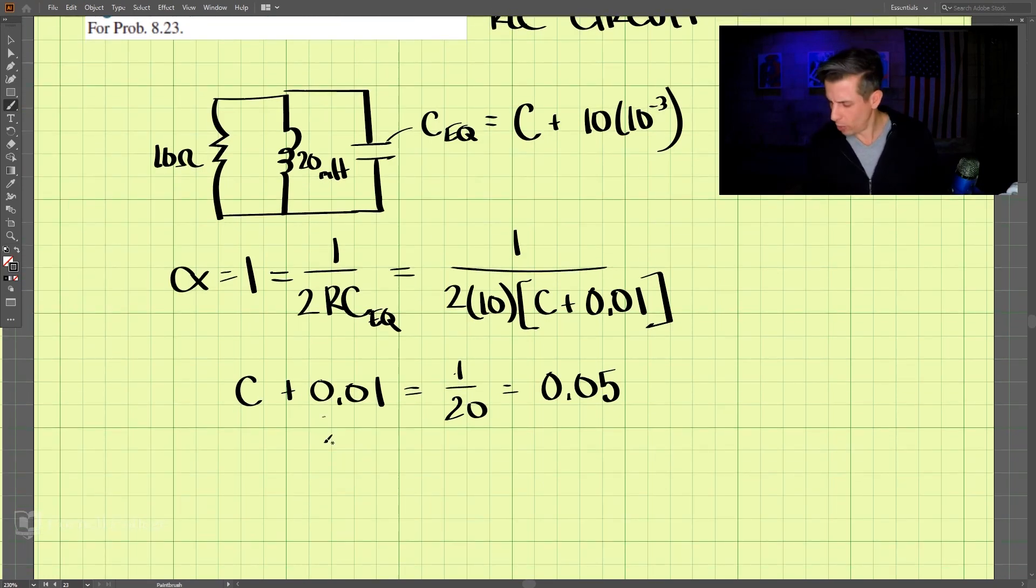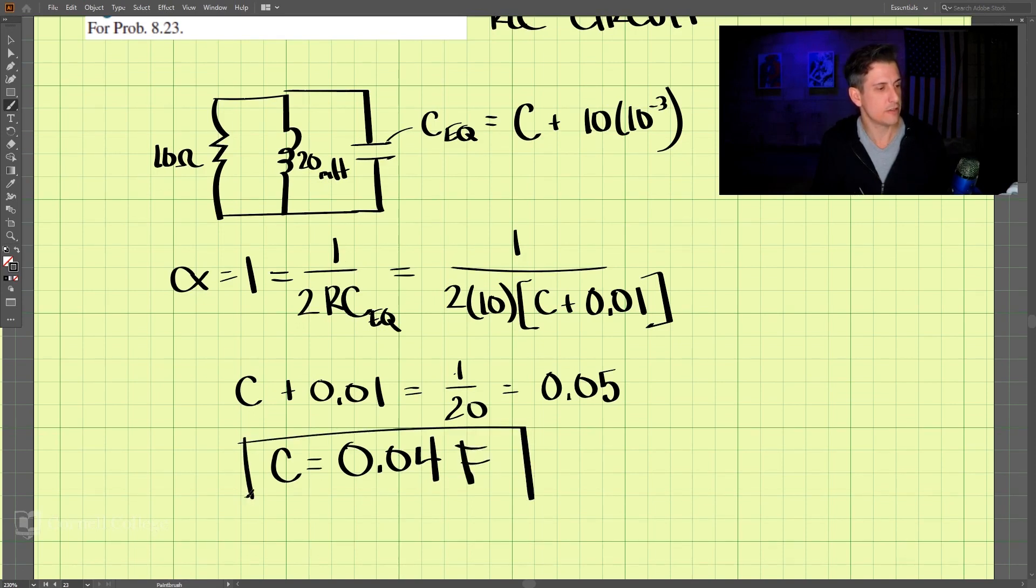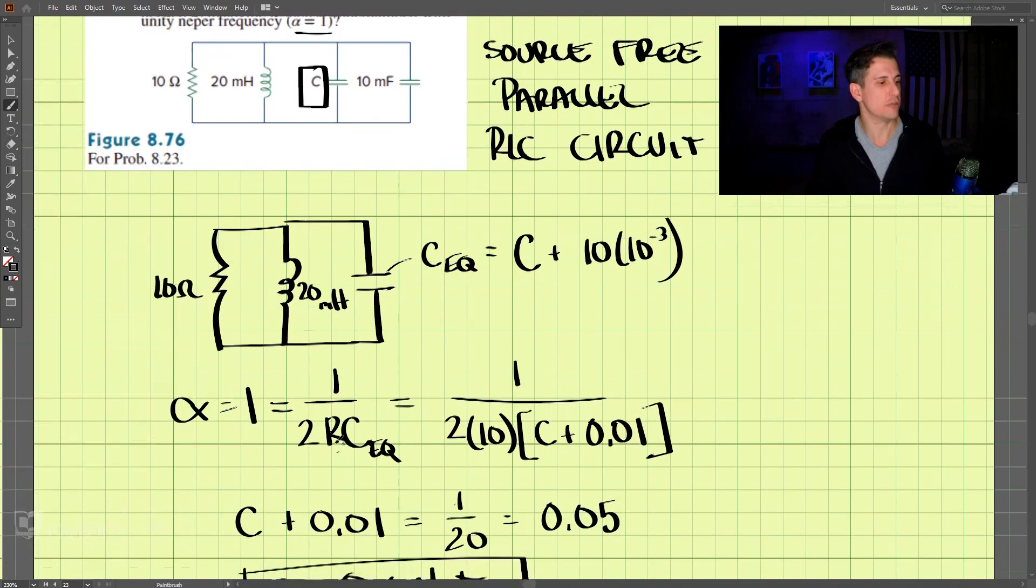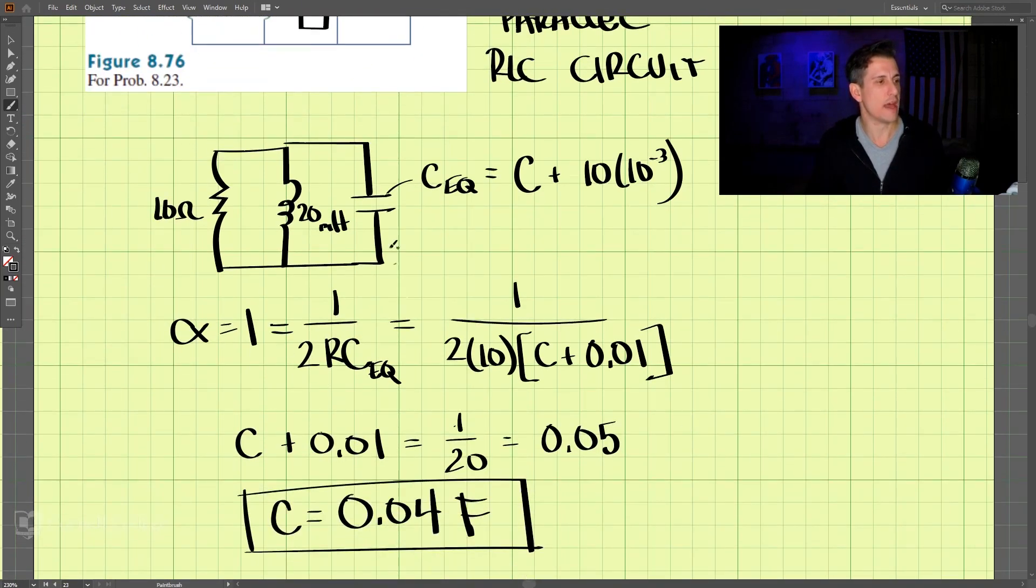So what we come out to be, this equivalent, I should write C plus 0.01 equals 0.05. And C comes out to be 0.04 farads. Okay, so we solved it because we knew that alpha is 1. And by knowing that, we can solve for C.